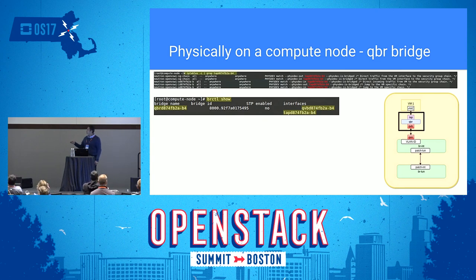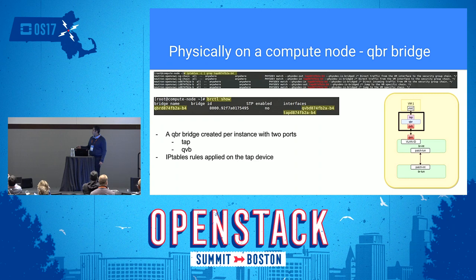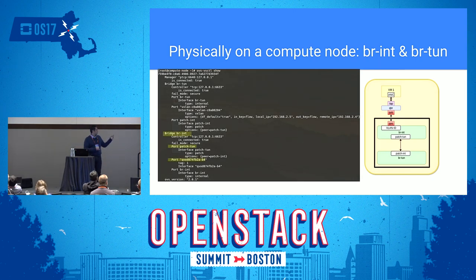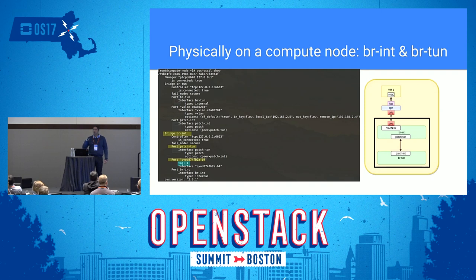To see the OVS parts, running `ovs-vsctl show` reveals BRINT (integration bridge) with a patch-tunnel connection to the tunneling bridge, and QVO ports each with a VLAN tag — the local VLAN ID for that network. The BR-tunnel bridge has a patch-int port connecting back to integration, and VXLAN port definitions. The BRTunnel creates a mesh of tunnels between this host and all other hosts in the environment.